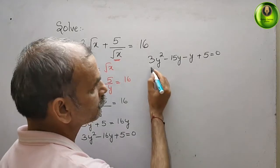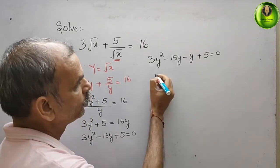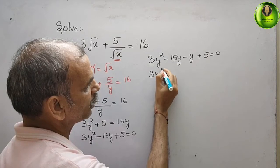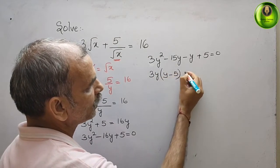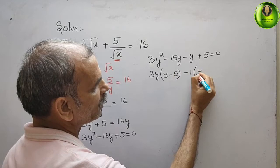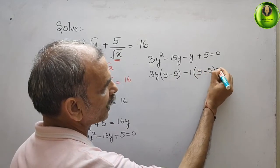Now see the common. What are the common in first row? You can see 3y is common. You will get y minus 5. Here minus 1 is common. Again you will get y minus 5. That gives you 0.